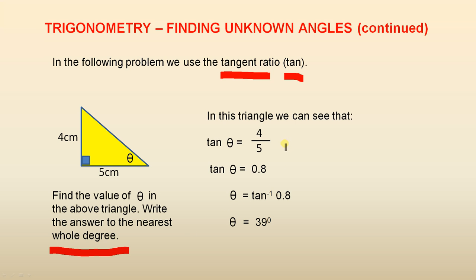So tan theta equals 4 over 5, which is opposite over adjacent. Tan theta equals 0.8. So theta is the inverse tan of 0.8. So theta is 39 degrees to the nearest whole degree.